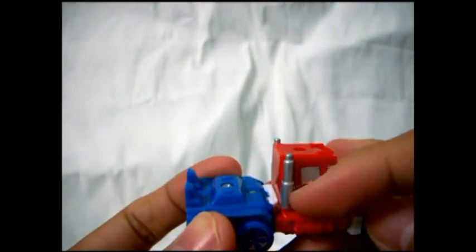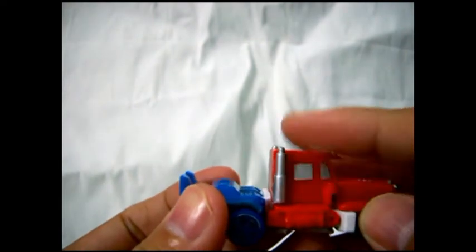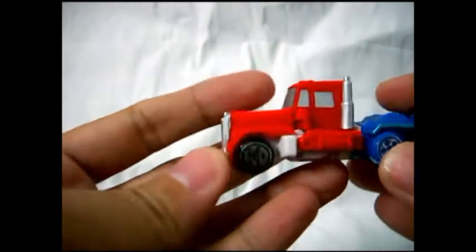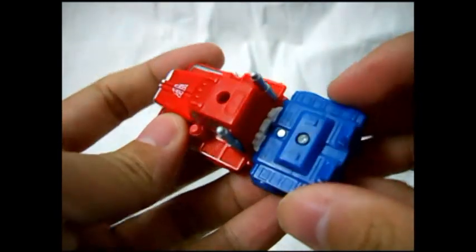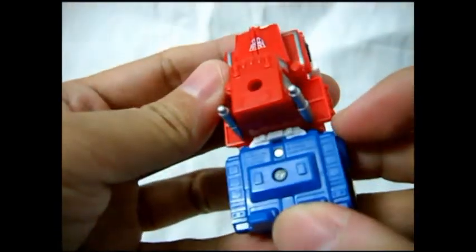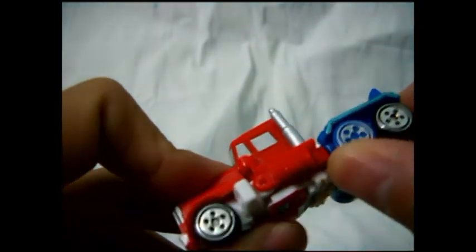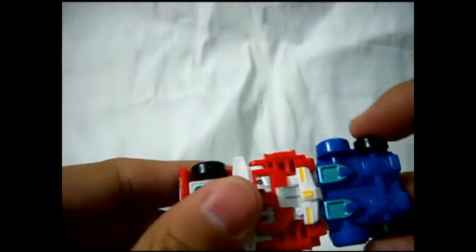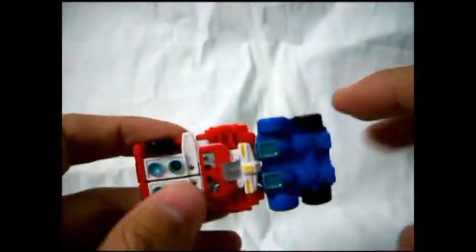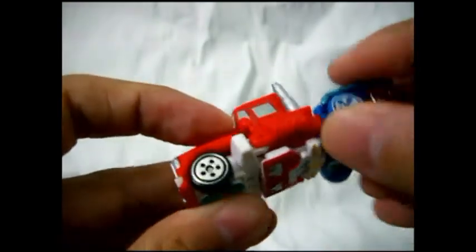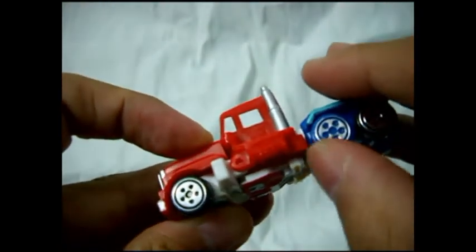His smokestack is here, it's painted grey. This is the bottom view. His wheels are painted plastic, this black, blue and black. Basically this is not a movable wheel.